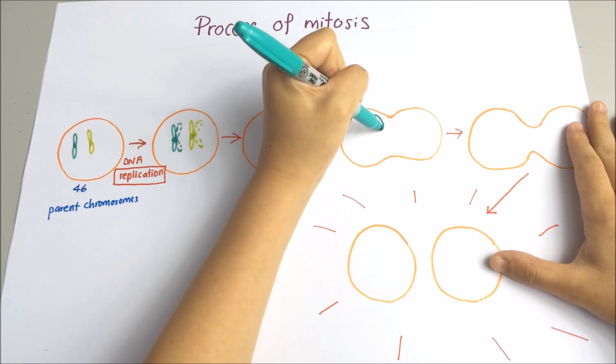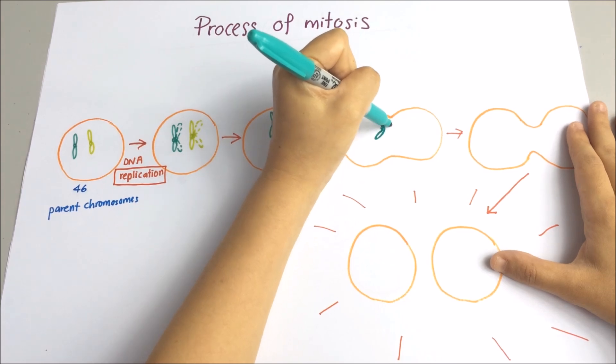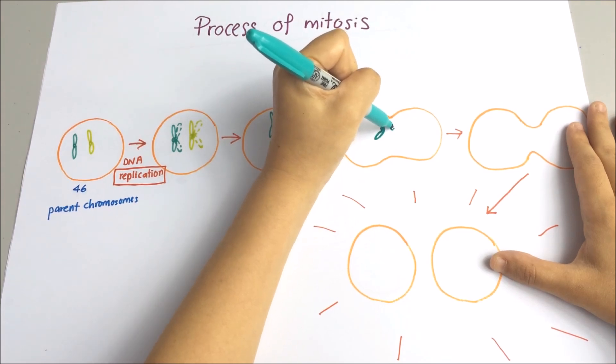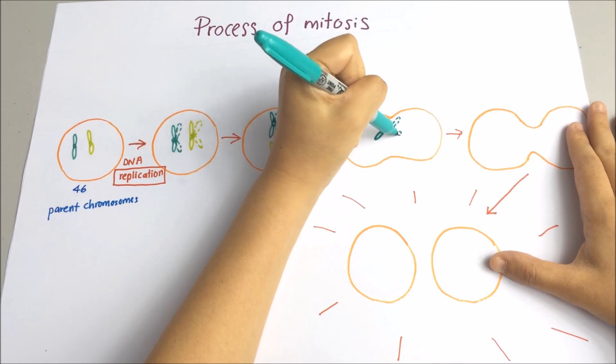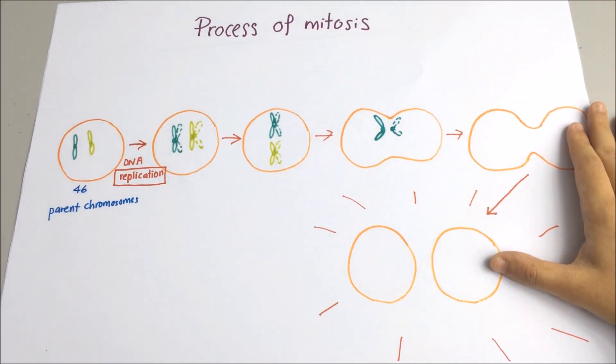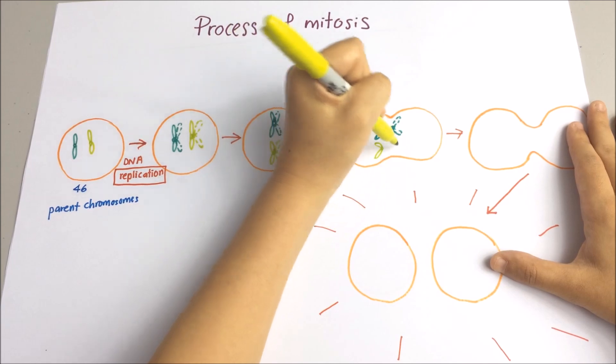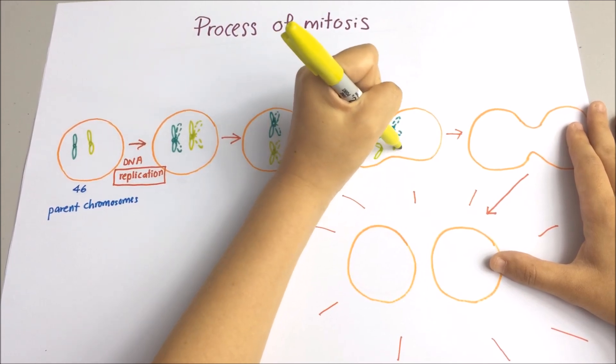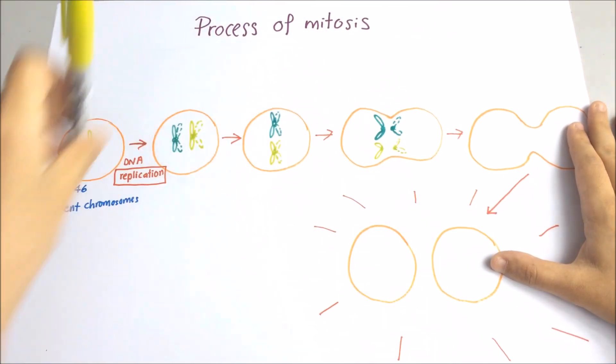The chromatids are then pulled apart. As you can see here, they move towards the opposite poles. So now you can see that the chromosomes separate.